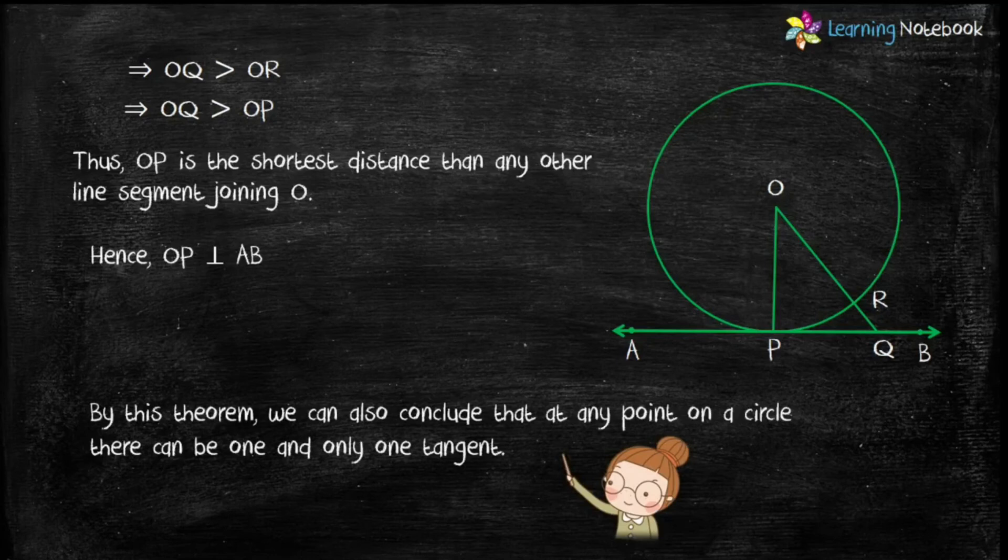By this theorem, we can also conclude that at any point on a circle there can be one and only one tangent.